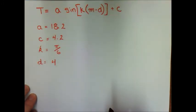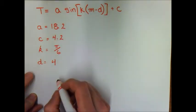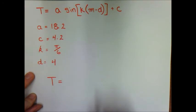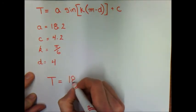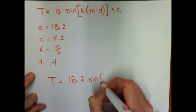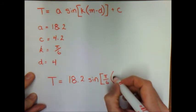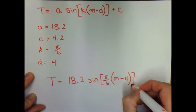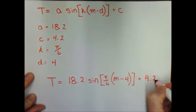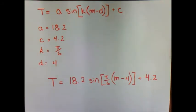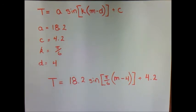We now have enough information to write the sine function that models the data. Temperature equals 18.2 times the sine of (π/6 times (m minus 4)) plus 4.2. In part b you are asked to make a scatter plot of the data using the table provided, which lets you see how well the sine function represents the data — which then allows you to answer section c of example 2.